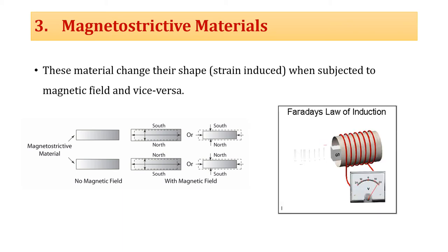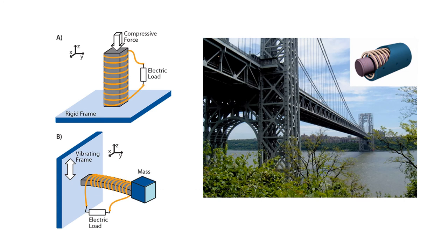As Faraday's law states, when there is a change in a magnetic field around a coil there will be a voltage generated. Magnetostrictive materials use this principle for energy harvesting. When a compressive force is applied to the magnetostrictive material, there is a change in the shape of the material, which causes a change in the magnetic flux around the coil. Because of the change in magnetic flux, electric current or voltage is generated, which is stored in a battery.